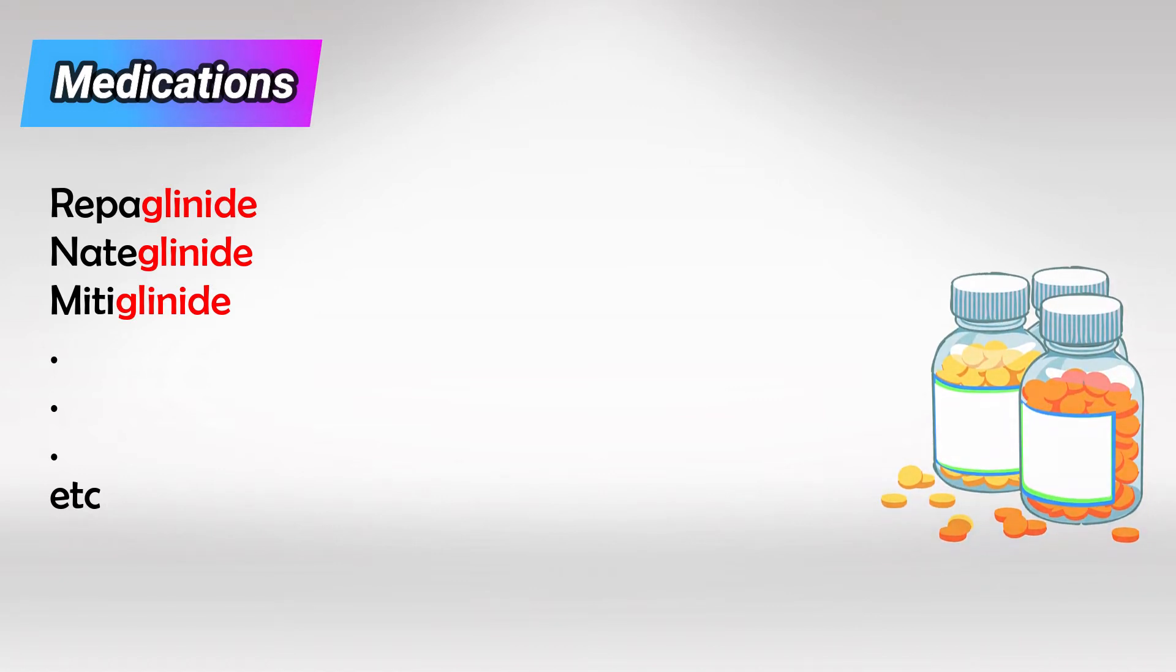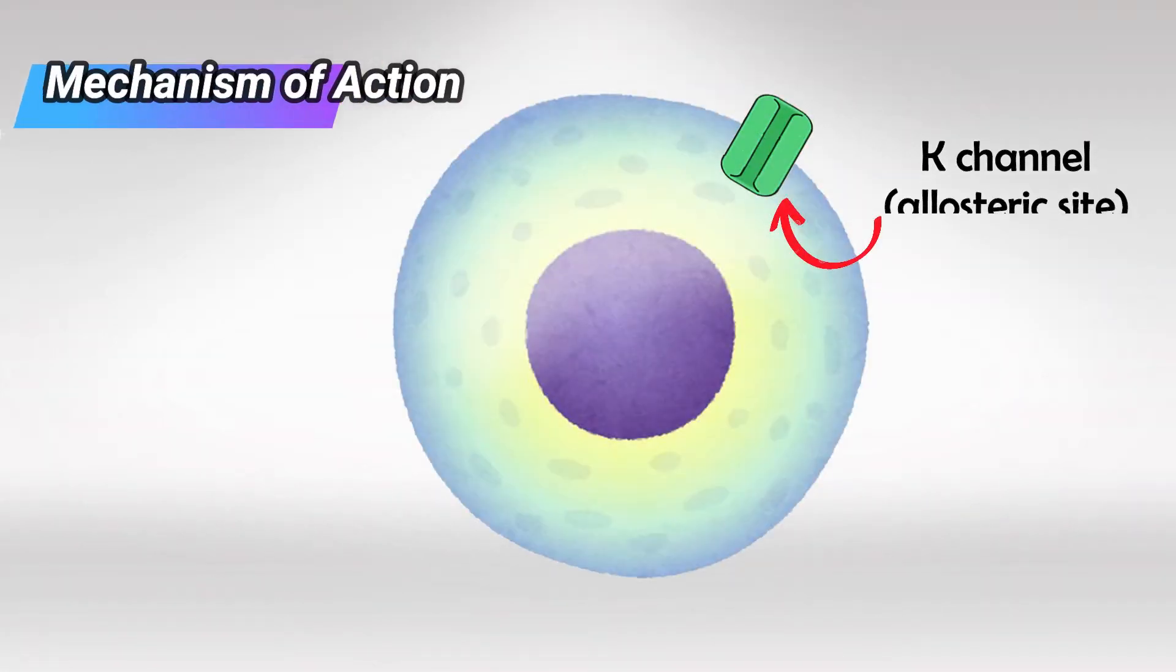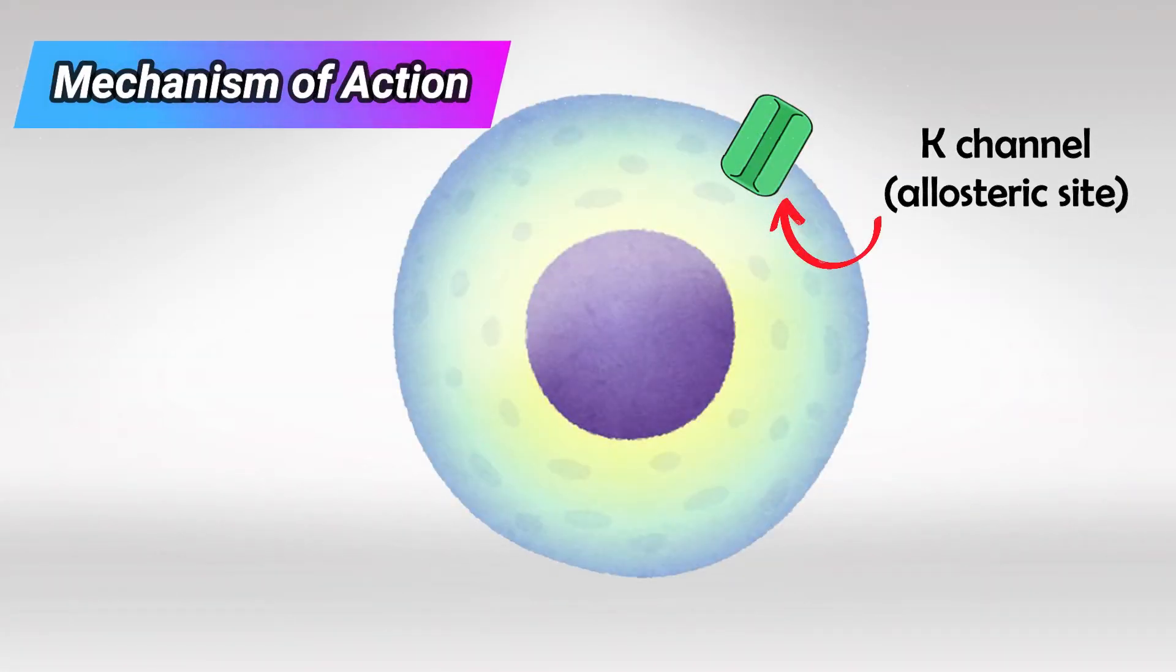They work by binding to the allosteric site of potassium channels on beta cells, so they do require functioning beta cells. This results in the release of insulin. Their most effect is noted in postprandial use.